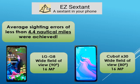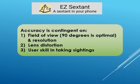These accuracy results were measured using an LG Inqubit smartphone. Your accuracy will be contingent on several factors such as camera field of view and resolution, lens distortion, and skill in taking sightings. If your phone has multiple cameras, the app will choose the one closest to 90 degrees.